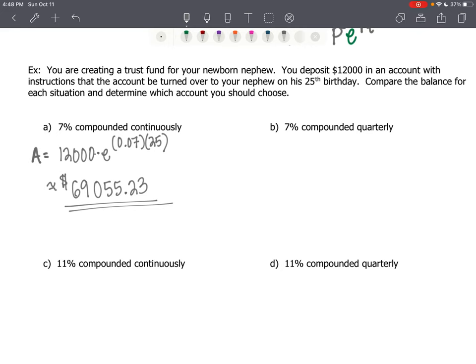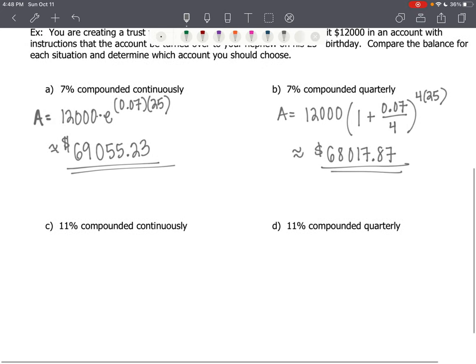We'd still have an initial principal balance of $12,000 multiplied by 1 plus our rate is 7%. Compounded quarterly means N would be 4. There's 4 quarters in a year. And then 4 times 25. So, N times T. We put that into our calculator and we get approximately $68,017.87. So far, 7% compounded continuously is a little bit better.